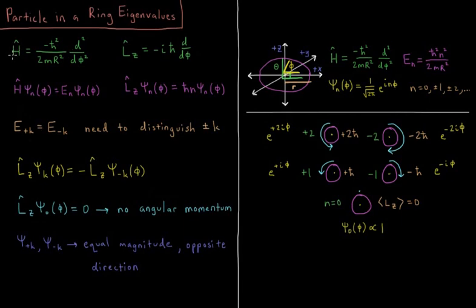With the Hamiltonian, that's going to give the Schrodinger equation, so the Hamiltonian acting on psi equals e times psi.